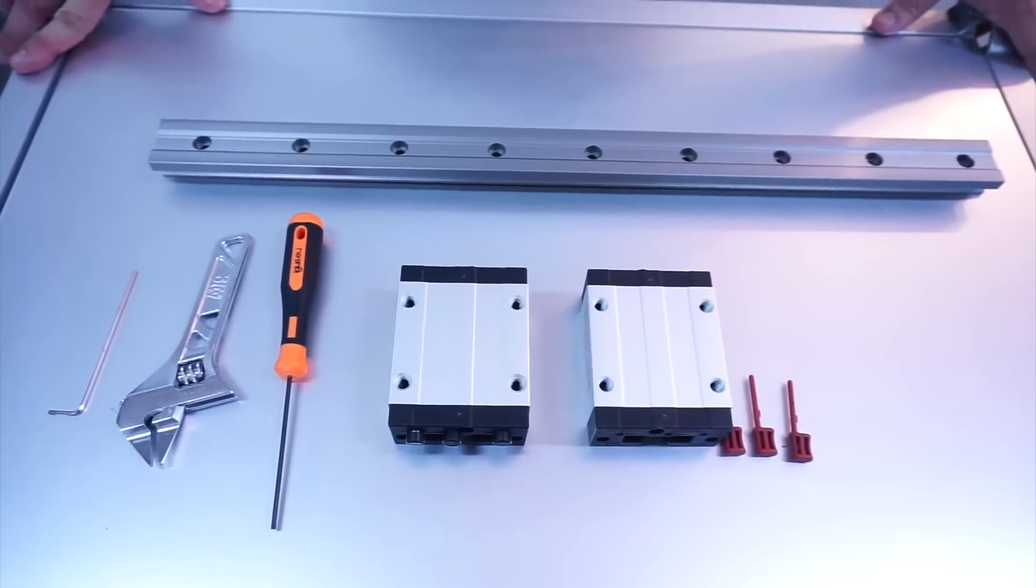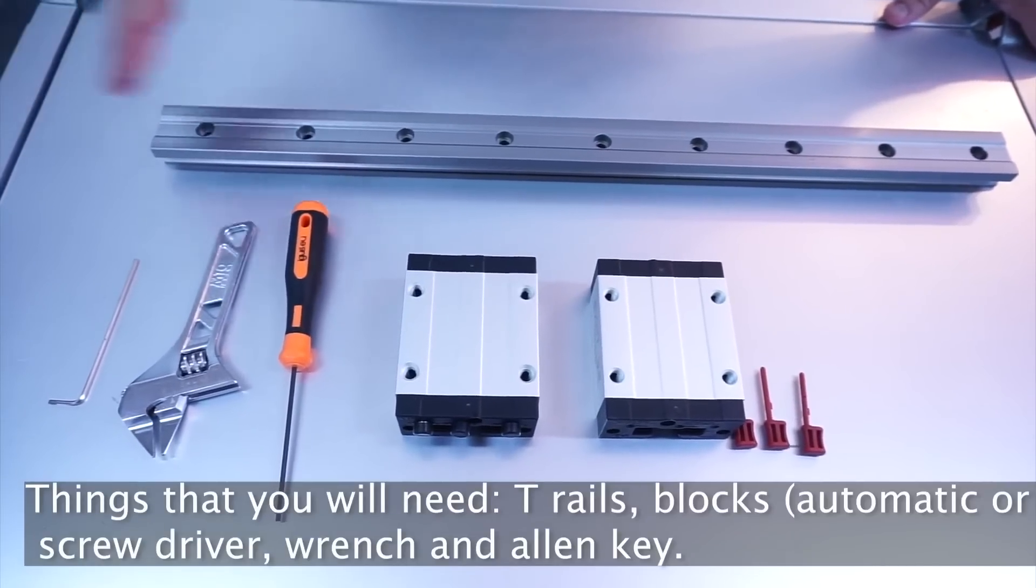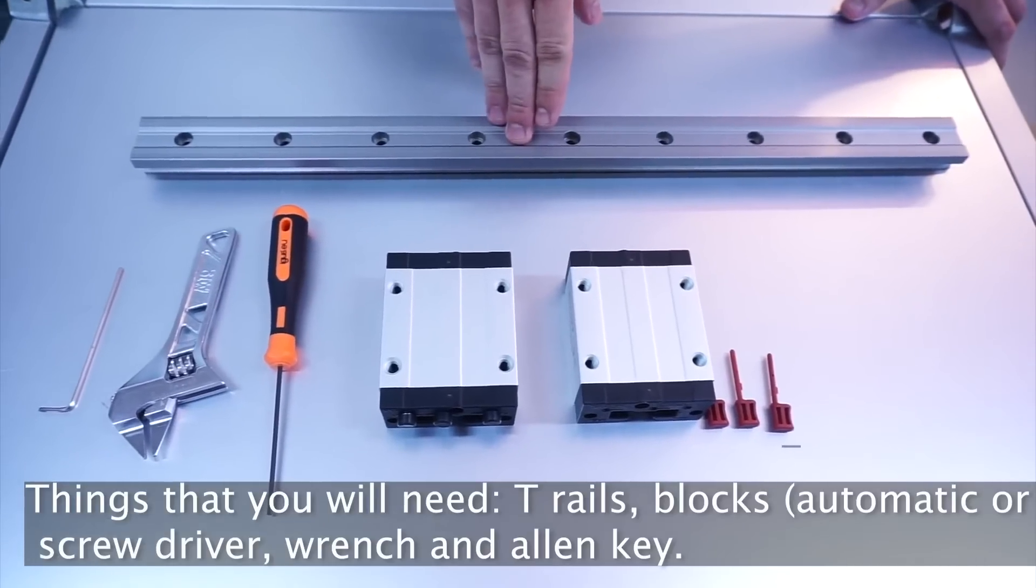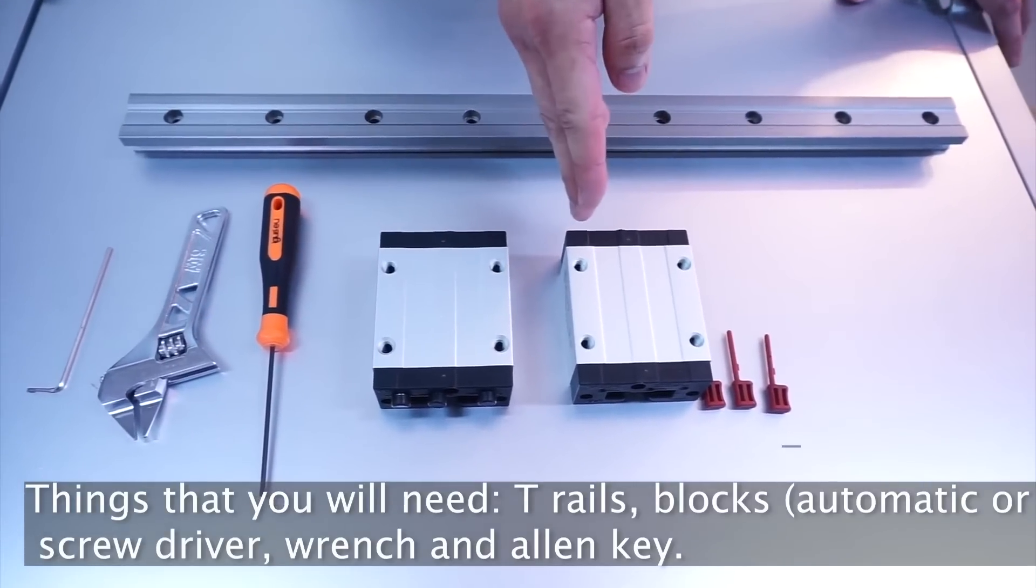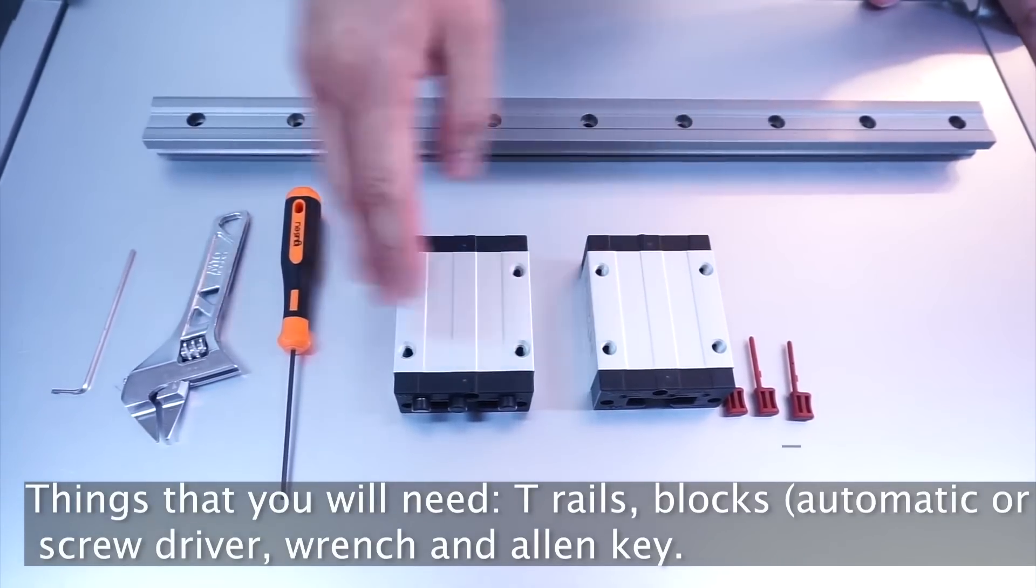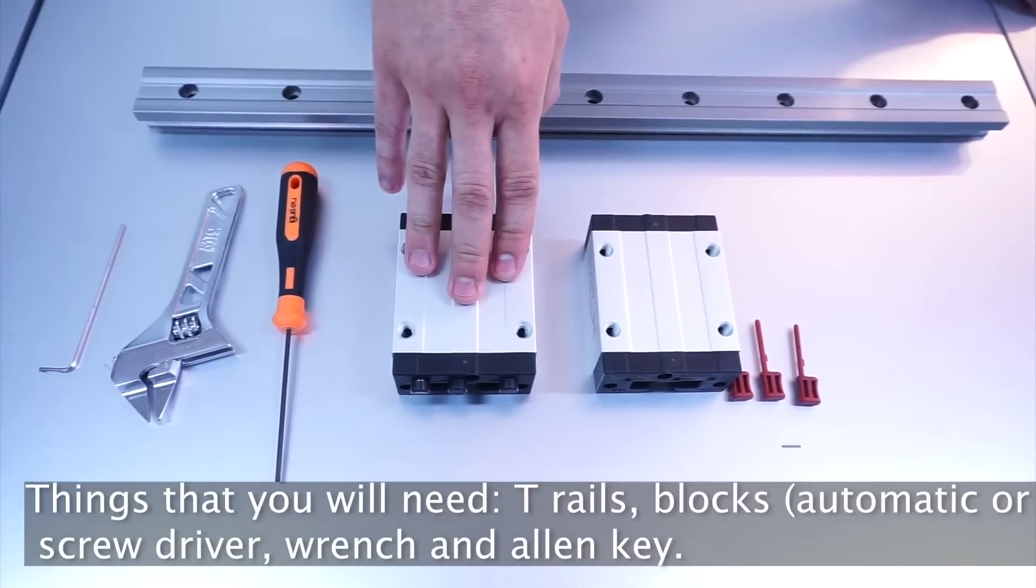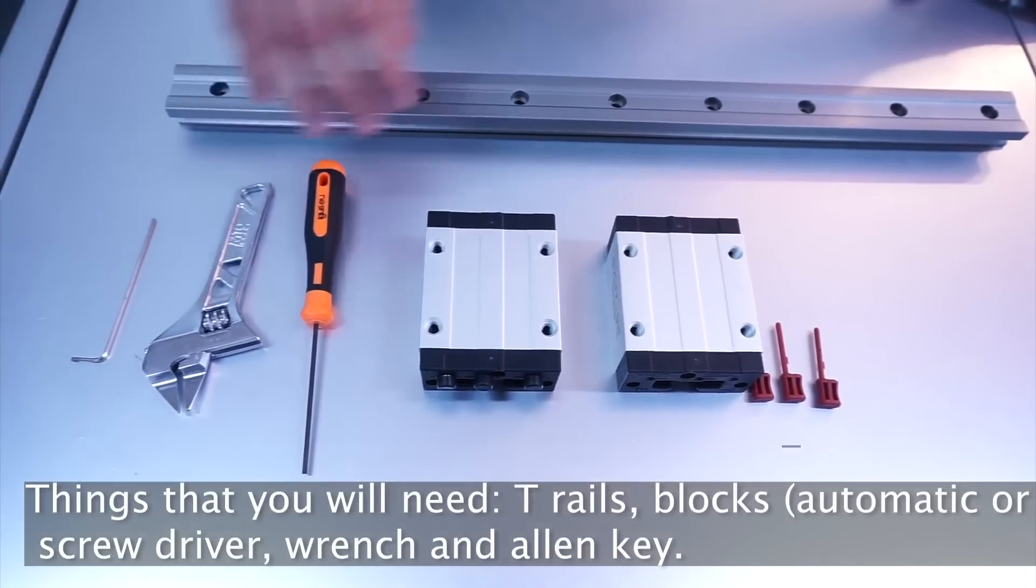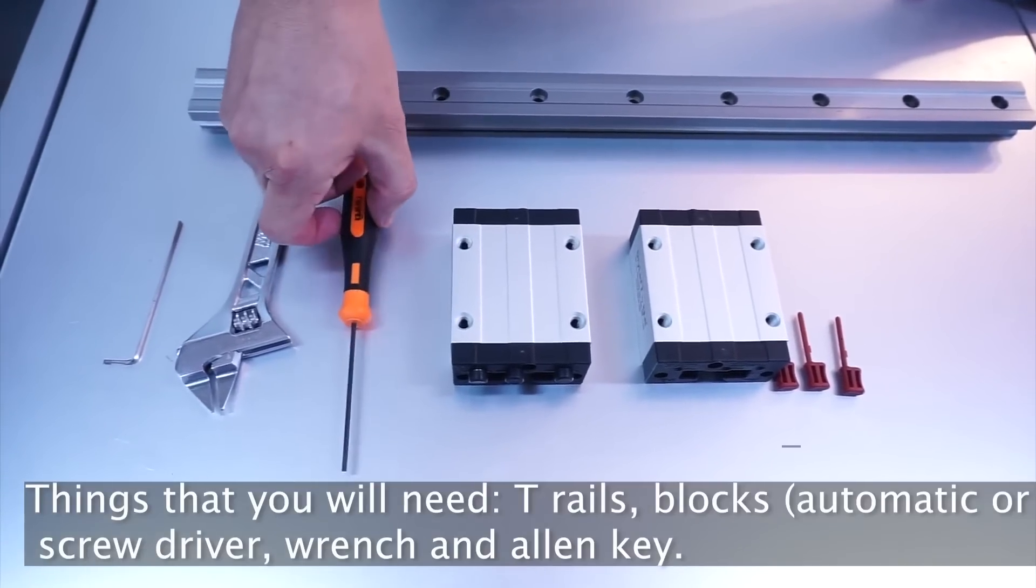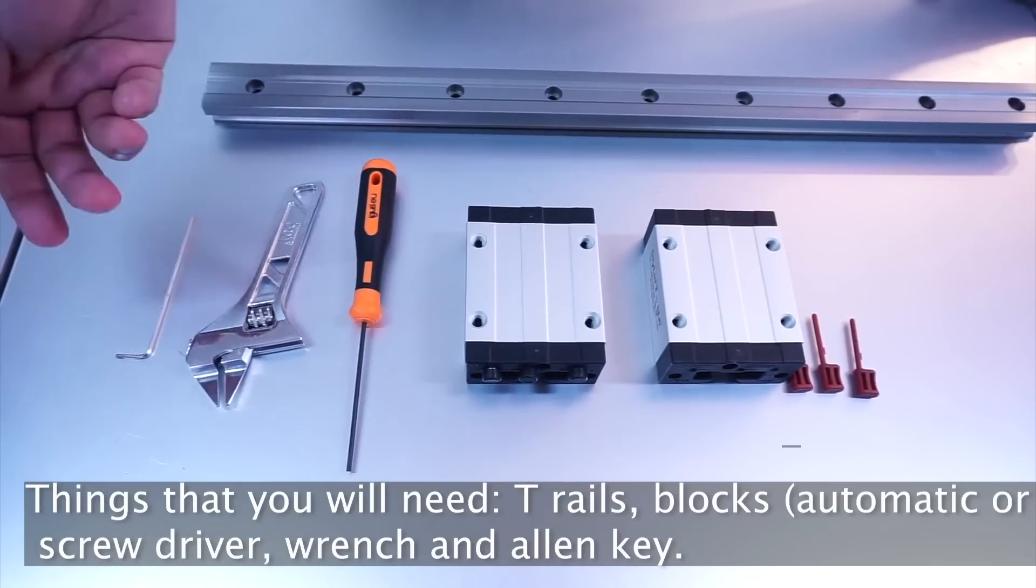Now, to assemble our DryLint system, we need the T-rails, we need the blocks, which is either the automatic blocks or the manual blocks. Next, you might need a flat screwdriver, a wrench,